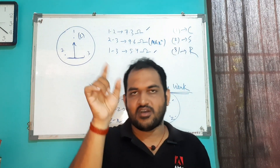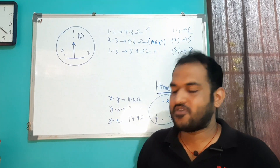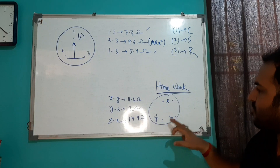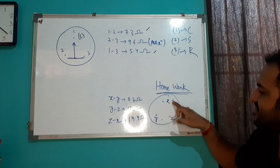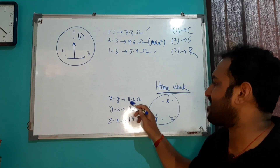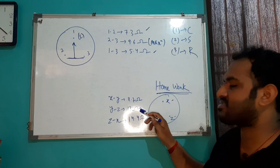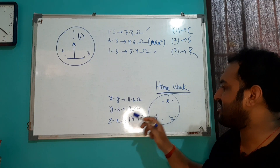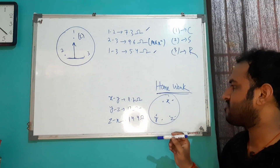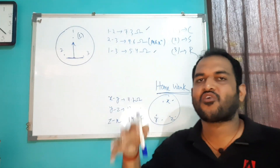You can identify all three terminals by this method using your multimeter. Here is a homework problem: a compressor has three terminals X, Y, Z. The resistance across X and Y is 11.7 ohms, resistance across Y and Z is 13 ohms, and resistance across X and Z is 14.4 ohms. Which one is your C, S, R terminal? Please write your answer in the comment section.